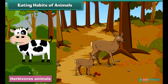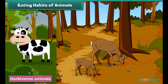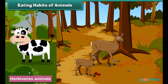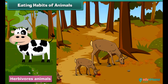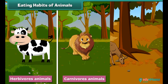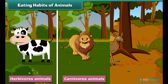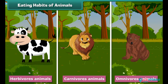Herbivores eat plants. They have sharp and flat teeth for grinding grasses and leaves. Cow, goat and buffalo are examples of herbivores. Carnivores eat flesh with their sharp, pointed and strong teeth — lion and tiger are examples of carnivores. Omnivores eat both plants and flesh; bear and crow are examples of omnivores.